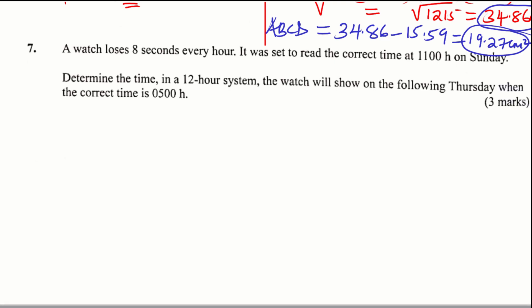To solve this question, you need to calculate the number of hours from 11:00 hours on Sunday up to the following Thursday when the correct time is 05:00 hours. So how many hours are those? From Sunday 11:00 hours to the next Thursday 05:00 hours.